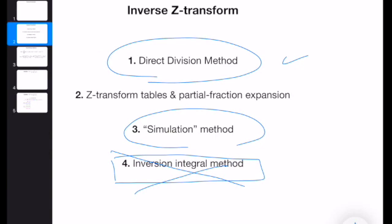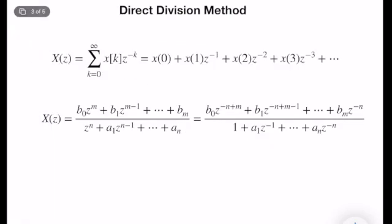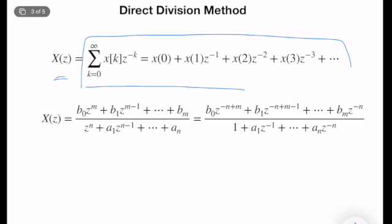But in this course, I will cover one, two, and three. Let's start with the direct division. So direct division method uses the fact that we can write x of z in this form. As you can see, this is the definition of Z-transform, right?